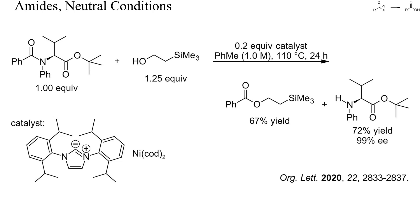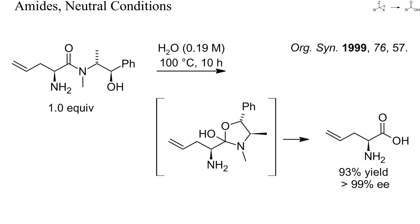Some amides are particularly sensitive towards certain catalysts or enzymes and can sometimes be cleaved under almost neutral conditions. Benzamides, for instance, react with alcohols and 20% of a nickel-carbene complex in refluxing toluene to give esters. Remarkably, a tert-butyl ester remained unchanged under these conditions. Two-aminoethanols acylated at nitrogen are also remarkably sensitive. In the presence of acids, such amides rearrange to 2-aminoethyl esters, which upon treatment with bases can often be rearranged again to the original amide. Here, such an amide was hydrolyzed just by refluxing in water for 10 hours.